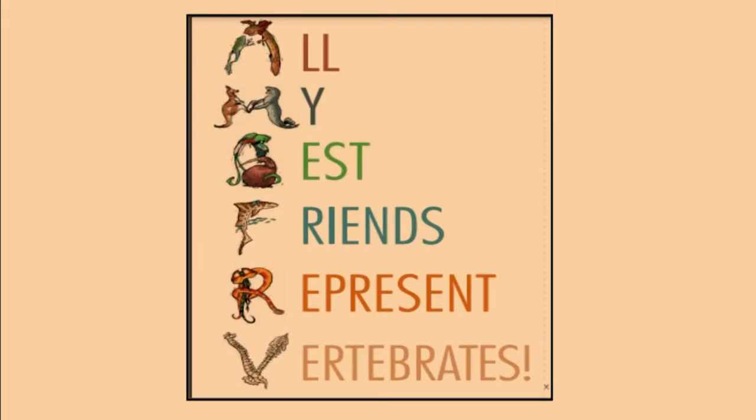Today we're going to be learning about fish. Today we're going to build off what we have already been learning. You will remember in previous lessons that we learned about vertebrates and invertebrates. Vertebrate animals have a backbone and invertebrate animals do not have a backbone. You will also remember that there are five groups of vertebrate animals. To help us remember, we can look at this chart and remember our mnemonic: All My Best Friends Represent Vertebrates. Today we will focus on the F for Friends in the mnemonic, which stands for fish.